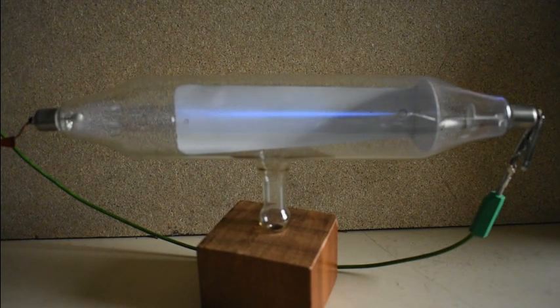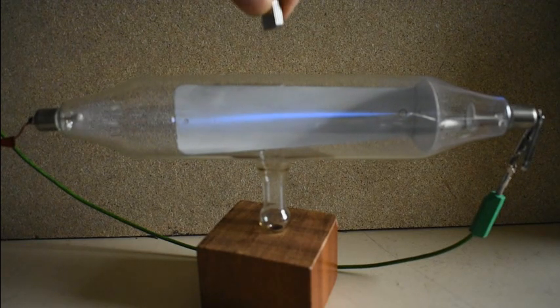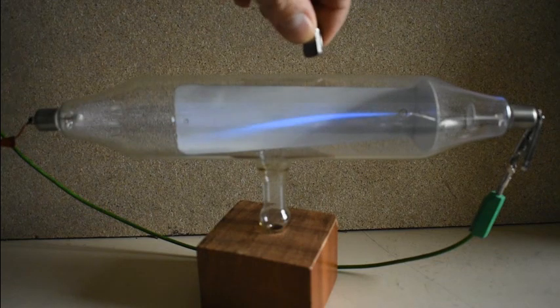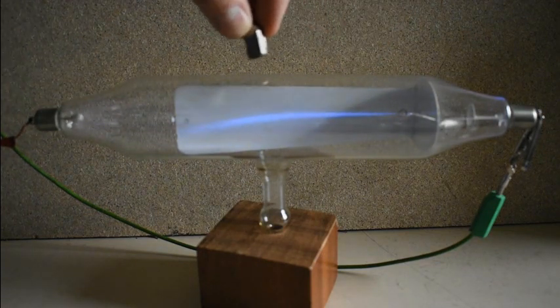But what we can do with this is demonstrate the electrons can be deflected by bringing a magnet up to the tube. So this magnet here can be used to deflect the electron beam.